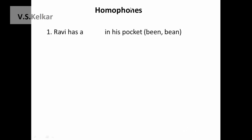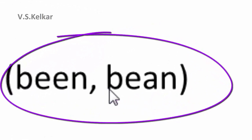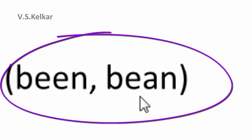First example: 'Ravi has a dash in his pocket' and 'Deepa has dash to Mysore.' Both the sentences should be filled by using one of the words given in the bracket. When we observe the two words given in the brackets, you can see different spellings — one is B-E-A-N and another is B-E-E-N. If you refer a dictionary, the meanings are also different.